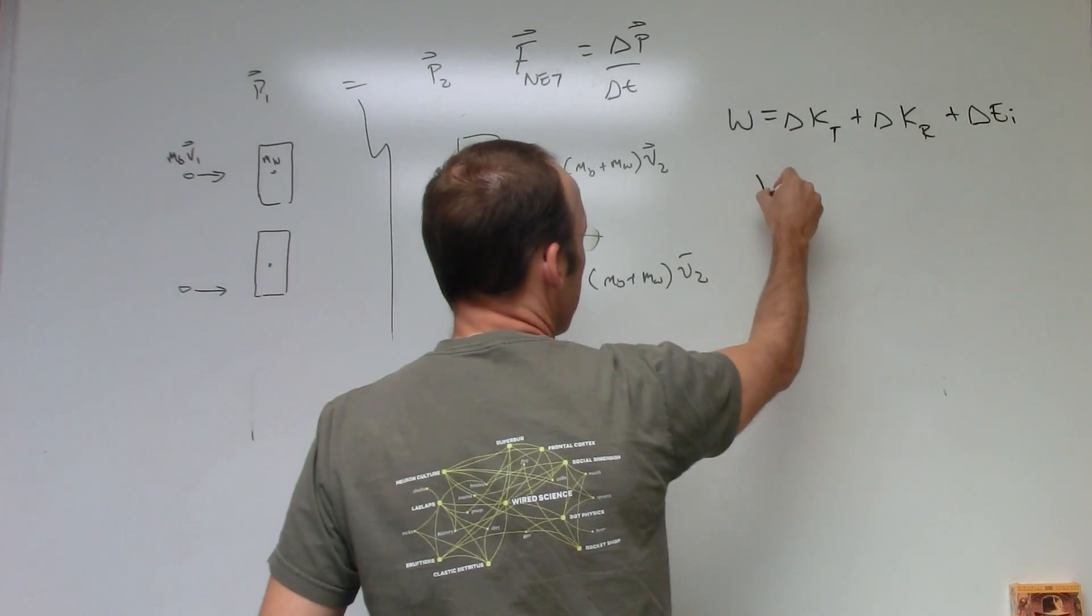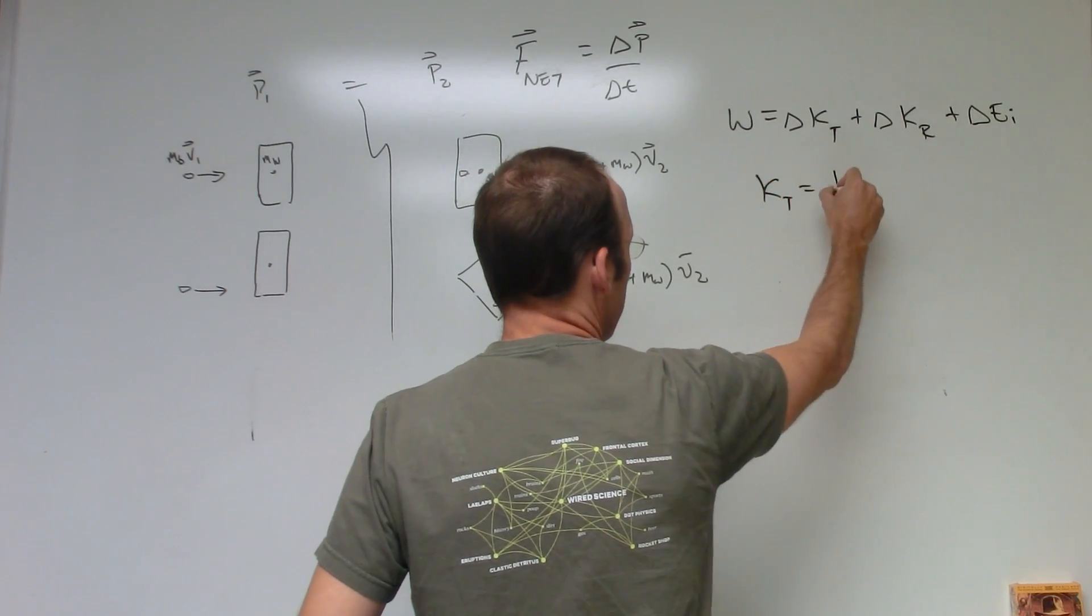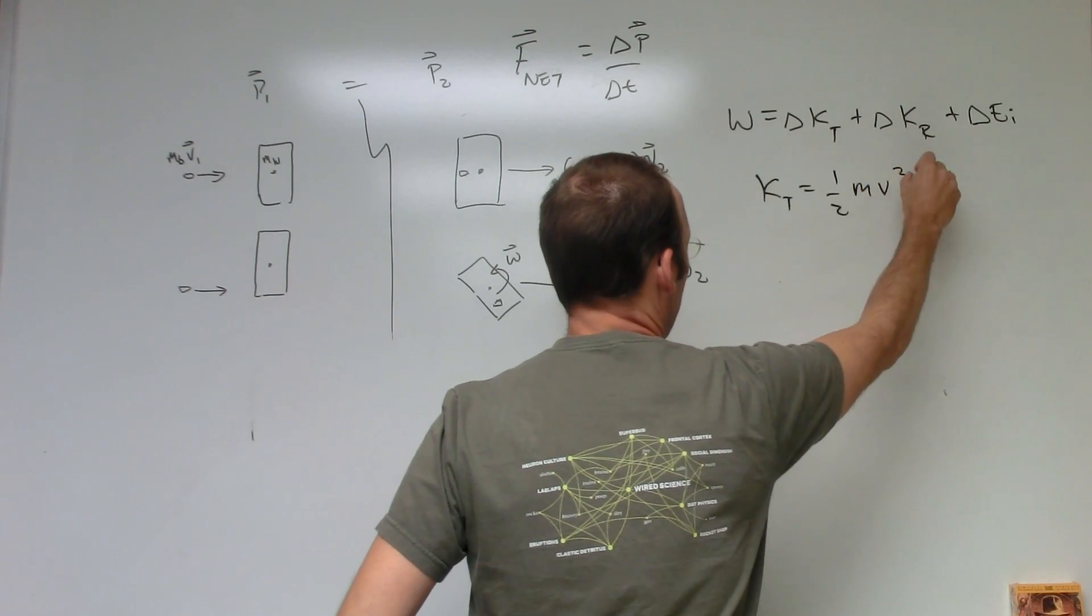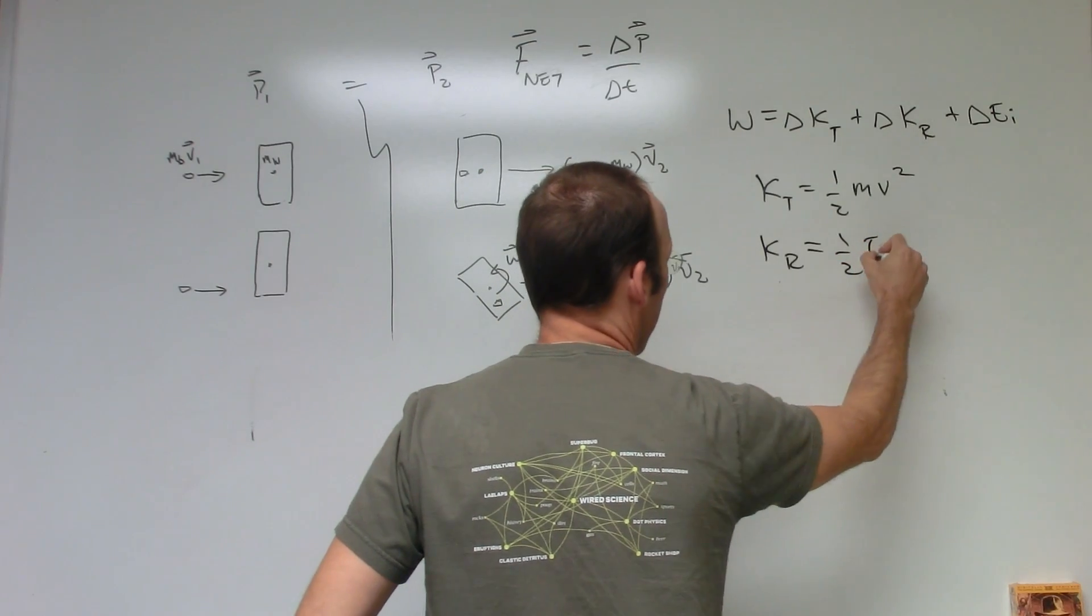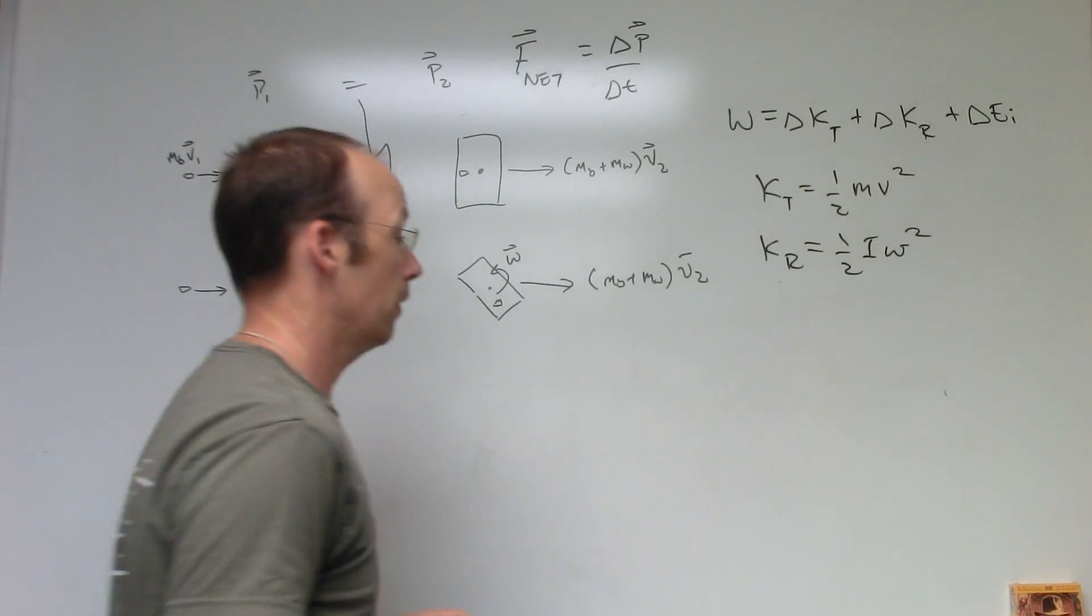So here, kinetic translational energy is one-half mv squared. Rotational kinetic energy is one-half i omega squared. This is mass times velocity squared. This is the moment of inertia depending on the shape and the mass and the size of the block. And this is the angular velocity.